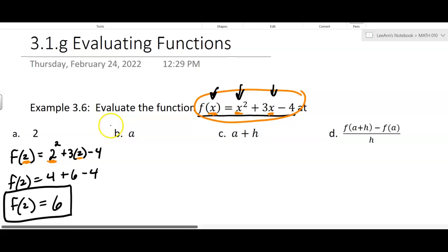Part B says we want to evaluate at A. Now this one always seems a little weird to students, but what we're saying is f of A equals A squared plus 3A minus 4. And you're done, you can't simplify that. That's done. So what really happened? Well, we replaced all the x's, all 3 x's, with A.